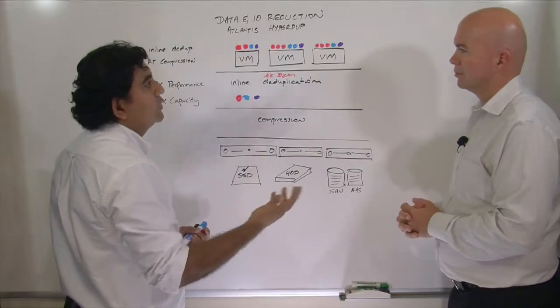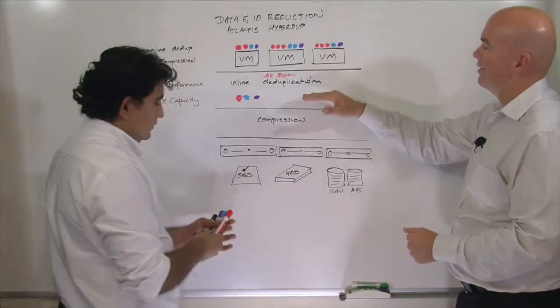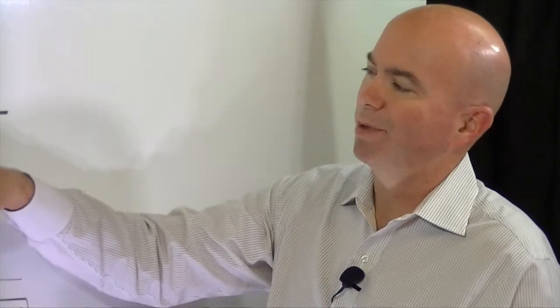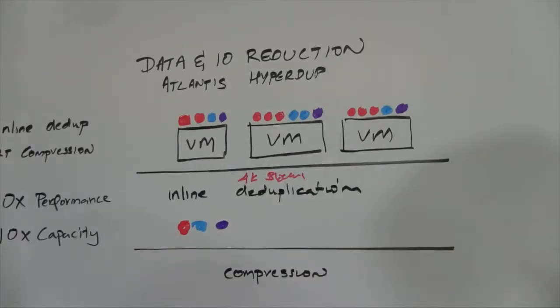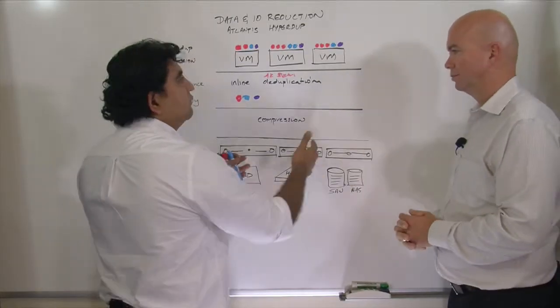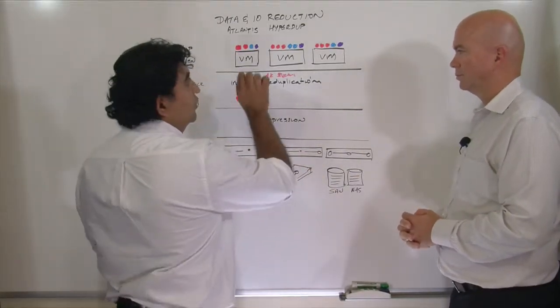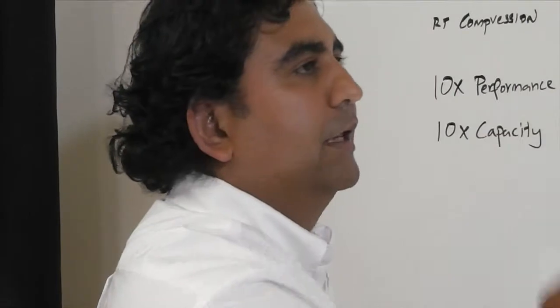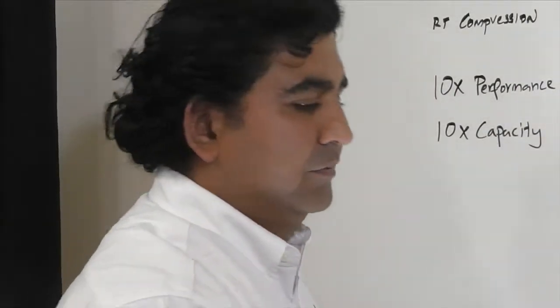So essentially my investment in workload here pays off because I'm reducing so much traffic at the back end, right? Exactly. So you need less storage, you need less fabric. Everything shrinks because you're leveraging deduplication at the right place in the whole stack.